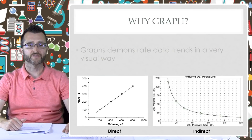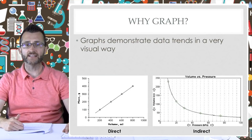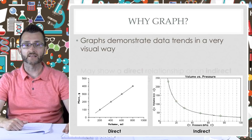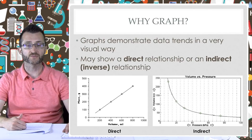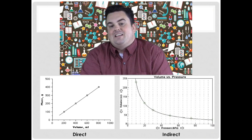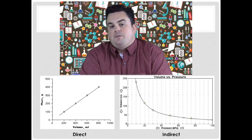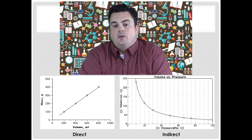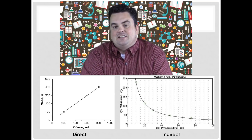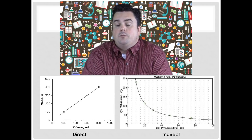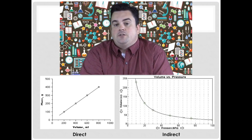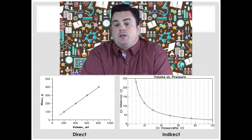Why graph? Graphs demonstrate data trends in a very visual way. Graphs may show a direct relationship or an indirect relationship, also known as an inverse relationship. As you can see in the examples below, the one on the left is a direct relationship — volume on the x-axis and mass on the y. As the volume increases, so does the mass. So they both go together. That's a direct relationship.